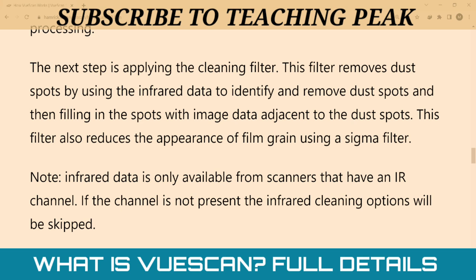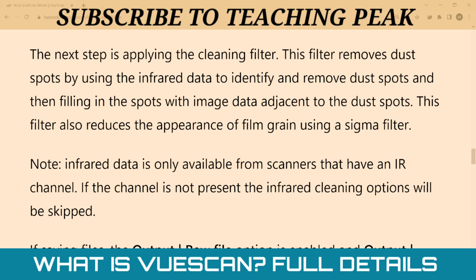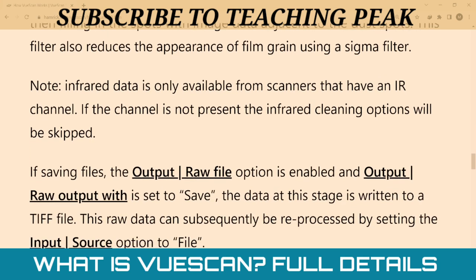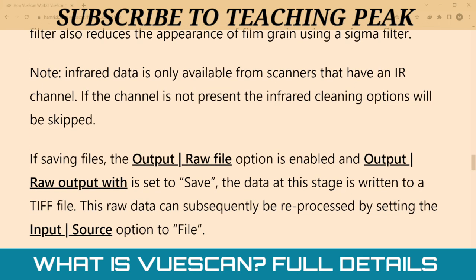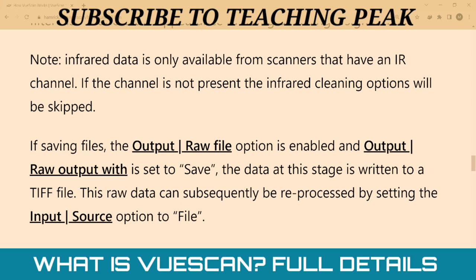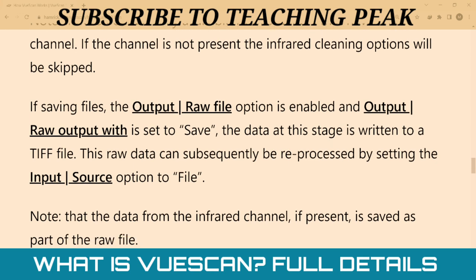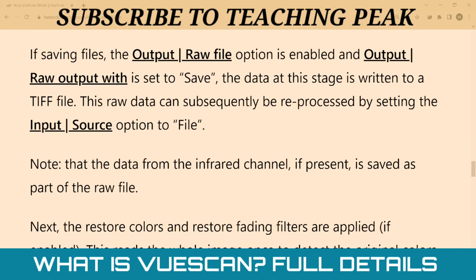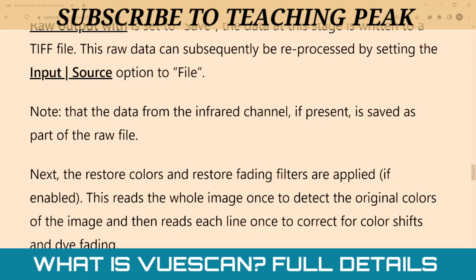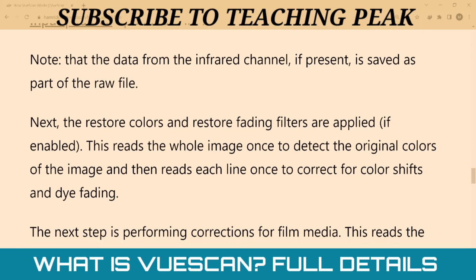This filter also reduces the appearance of film grain using a sigma filter. If the output raw file option is enabled and set to save, the data is written to the TIFF file. This raw data can subsequently be reprocessed by setting the input source option to file. Note that data from the infrared channel, if present, is saved as part of the raw file.